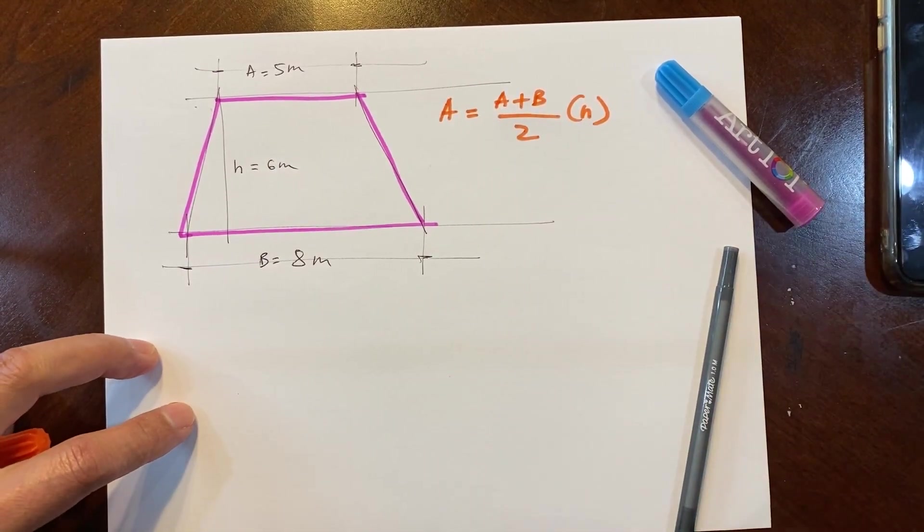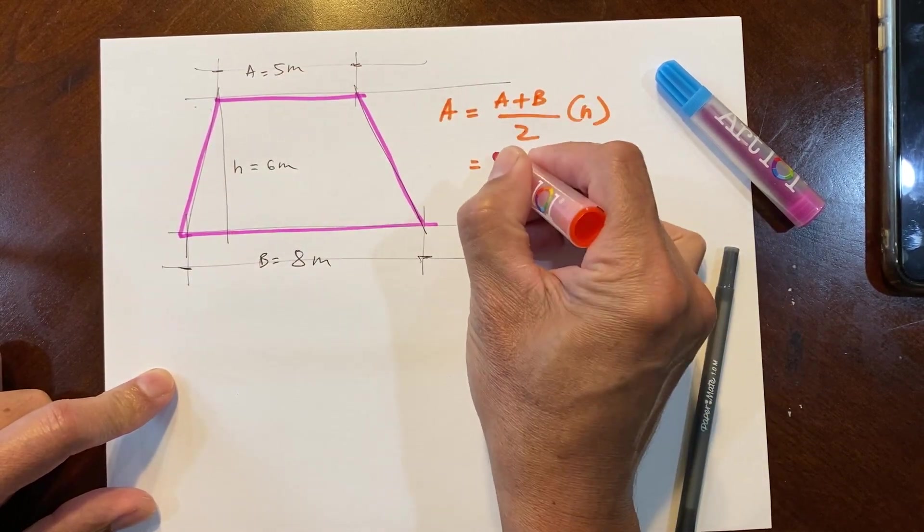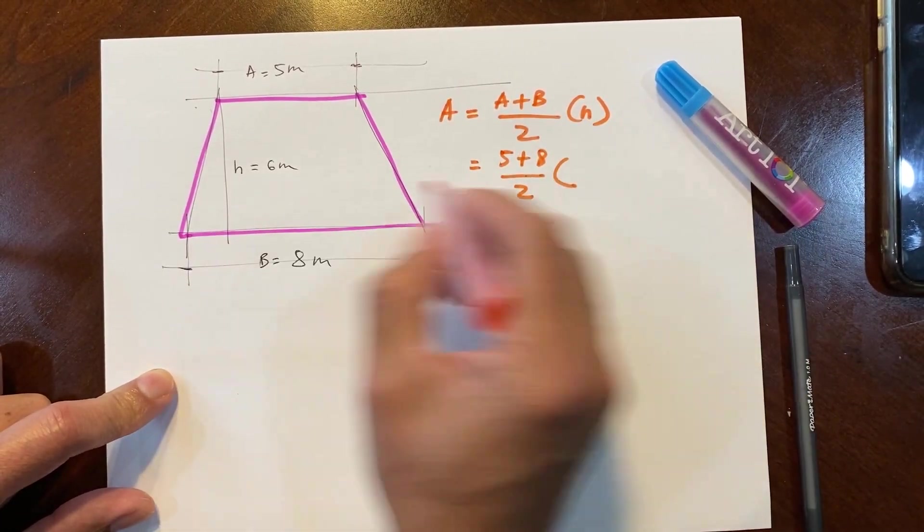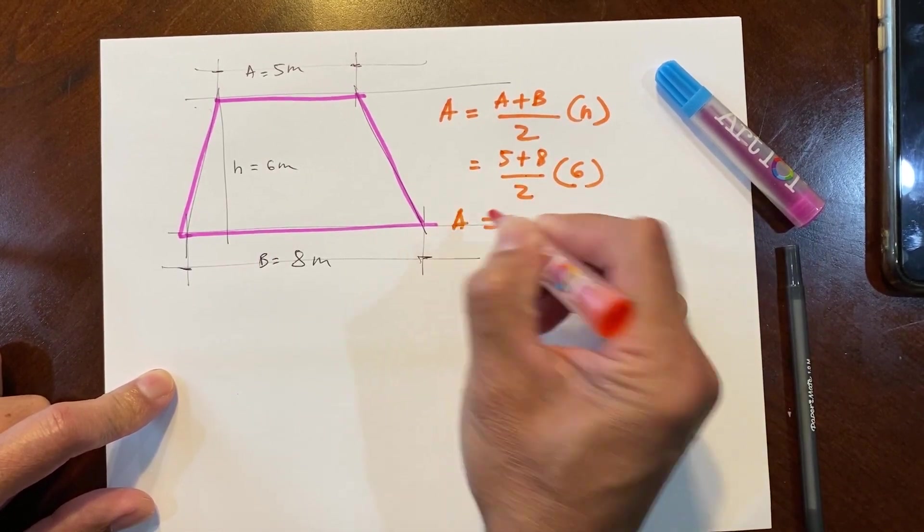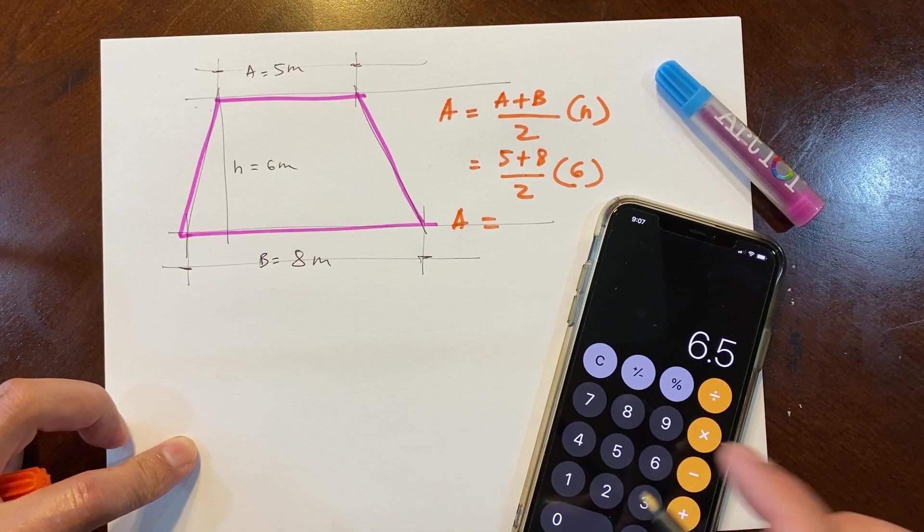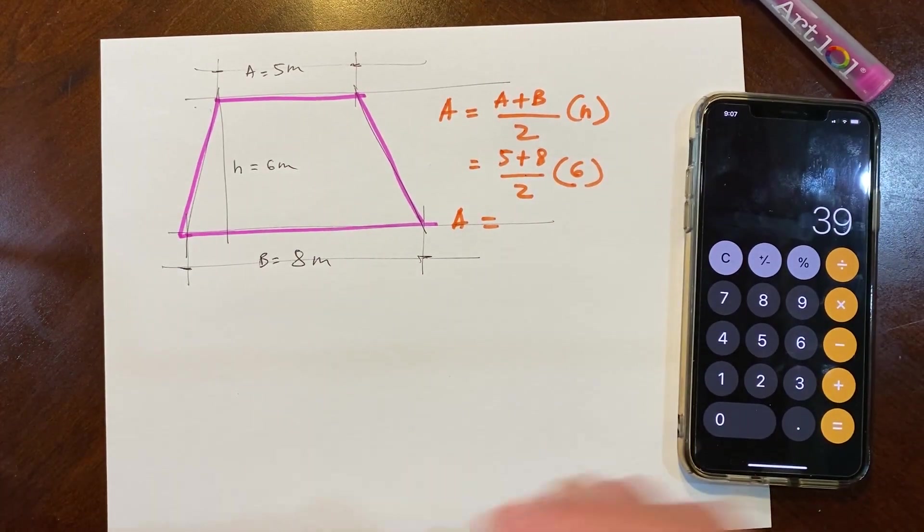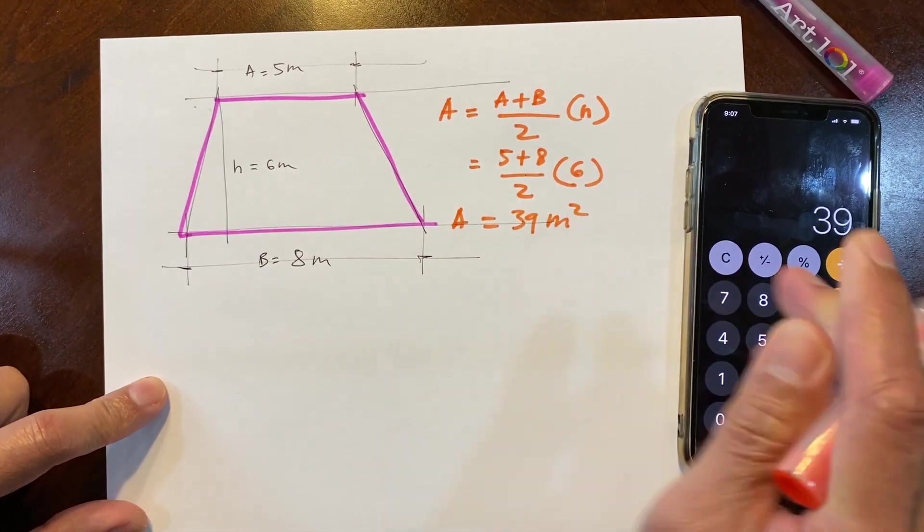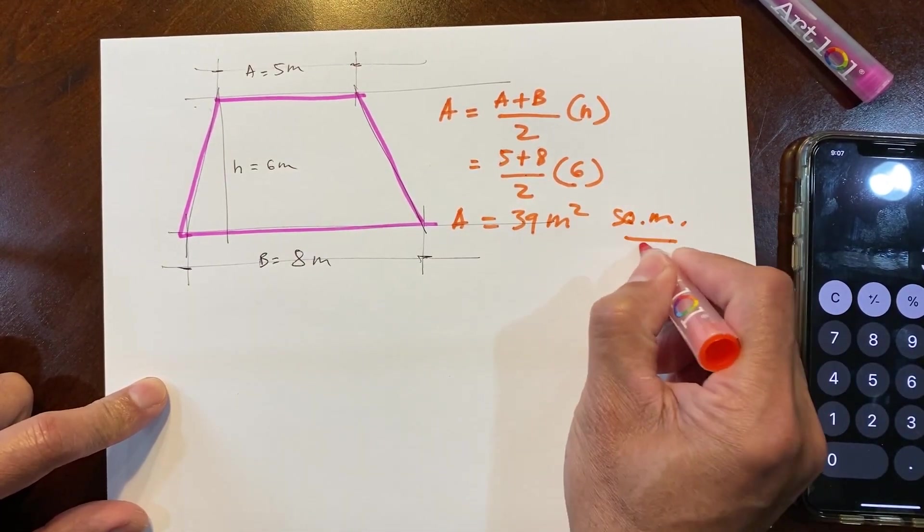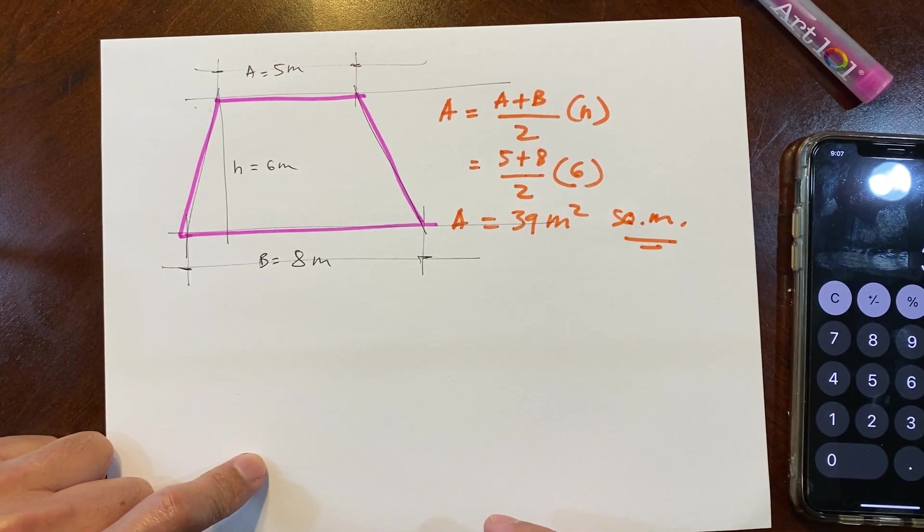Now we can get it by substituting on the formula. A equals 5, B equals 8, over 2, times H which is 6. So area will be 5 plus 8 equals 13, divided by 2 equals 6.5, times 6 equals 39. That's 39 square meter for this trapezoidal lot.